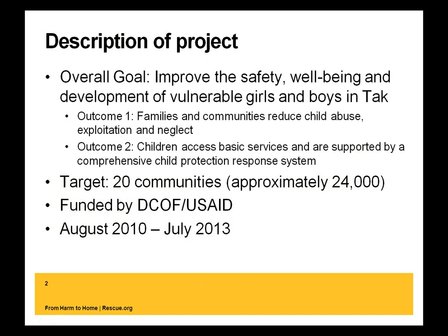In terms of a description of the overall project, the goal is to improve the safety, well-being, and development of vulnerable girls and boys in Tak district in Thailand. The first outcome is that families and communities reduce child abuse, exploitation, and neglect. The second outcome is that children access basic services and are supported by a child protection response system. The target is 20 communities, and this is a project funded by DCOF at USAID, running since 2010.